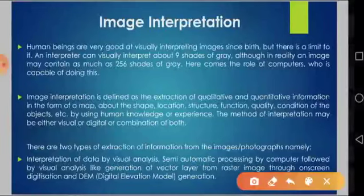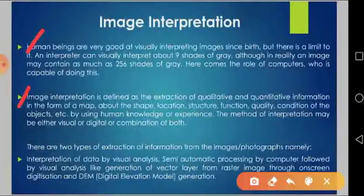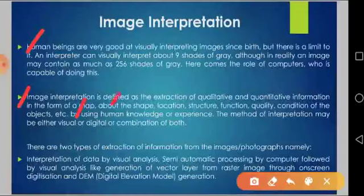Hence, image interpretation can be identified as the extraction of qualitative and quantitative information in the form of a map about the shape, location, structure, function, quality, and condition of objects by using human knowledge or experience. This method of interpretation may be either visual, digital, or a combination of both.